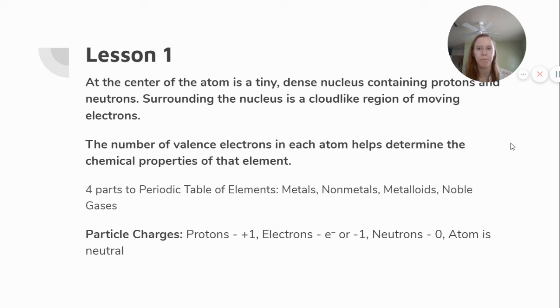The things to know from lesson one: At the center of the atom is a tiny dense nucleus containing protons and neutrons. Surrounding the nucleus is a cloud-like region of moving electrons. The number of valence electrons in each atom helps determine the chemical properties of that element. We talked about the periodic table of the elements. There were four parts it's broken up into: metals, nonmetals, metalloids, and noble gases. Every element fits into one of those four categories.